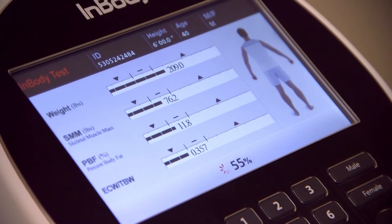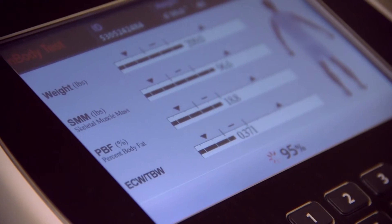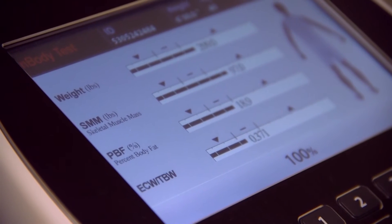Safe, low-level currents are sent through the body through the hand and foot electrodes. The impedance the currents encounter are measured, and from there, your body composition is derived.